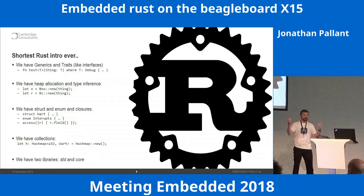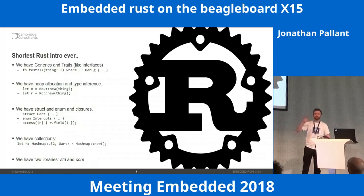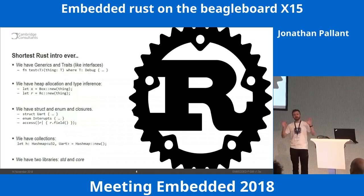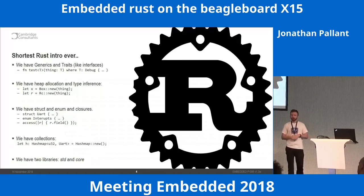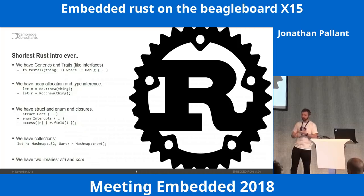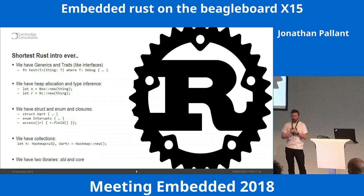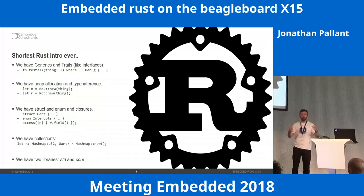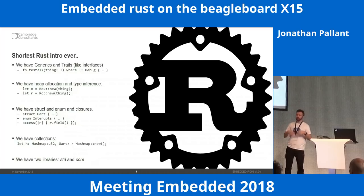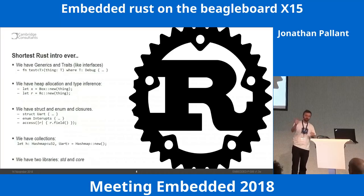We've got collections — vectors, hash maps. The key thing for embedded development is the standard library is split into two pieces. There is std, which requires an operating system — Windows, Mac, Linux, Fuchsia, Android, iOS, Solaris, FreeBSD, OpenBSD. And there is Core, which is the subset that works on bare metal. Core does not make any assumptions about the availability of threading libraries or file systems — it's just the fundamentals. You can opt in to the memory allocator and collections if you want to.